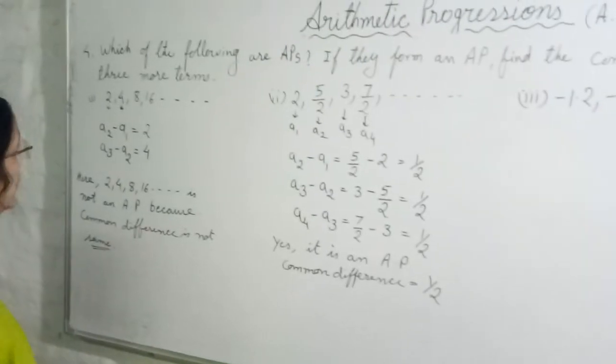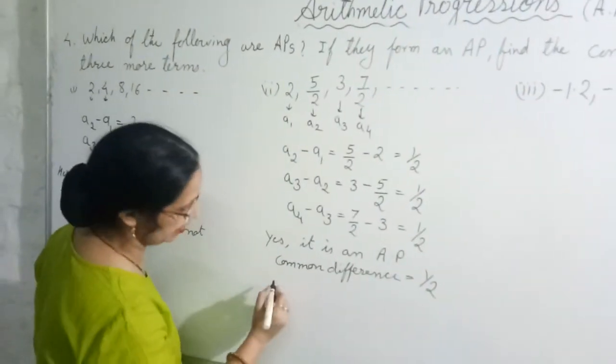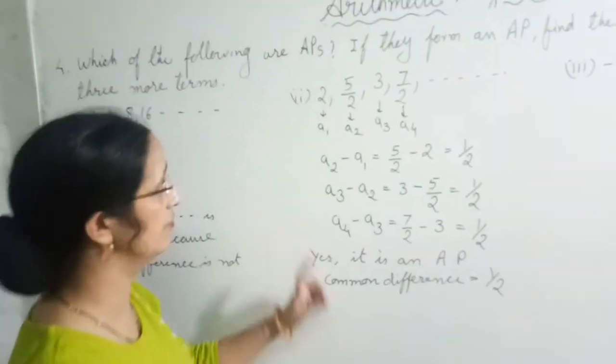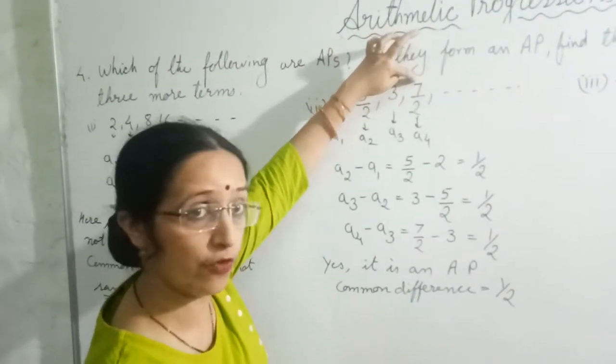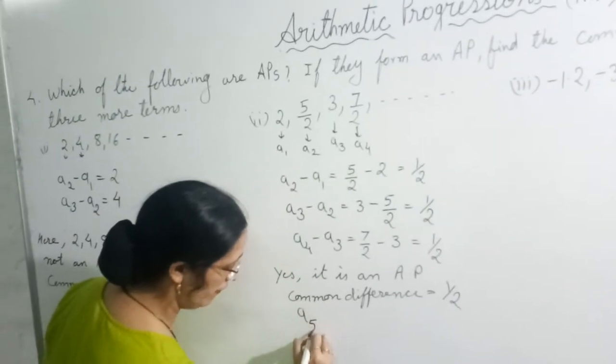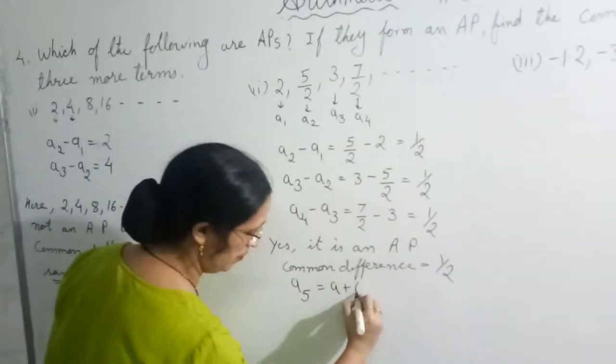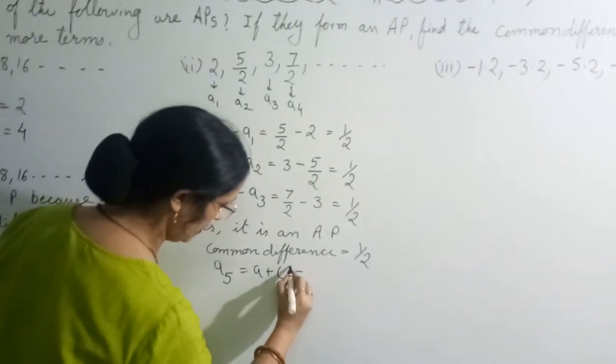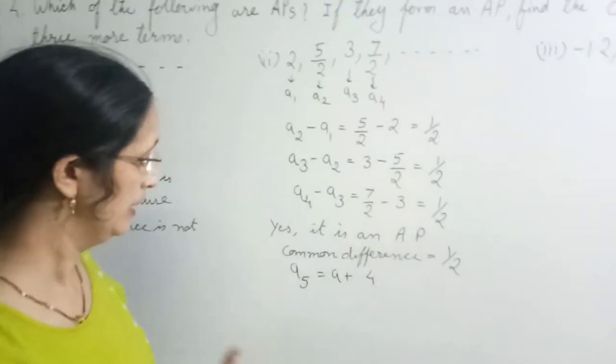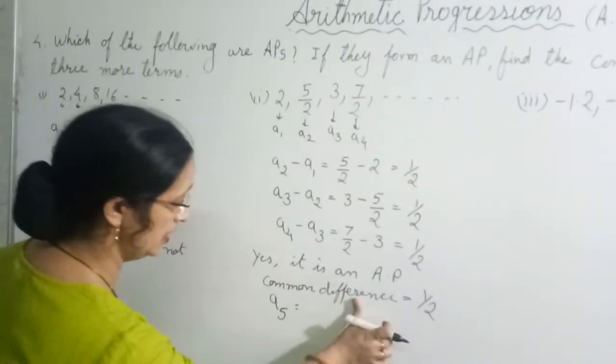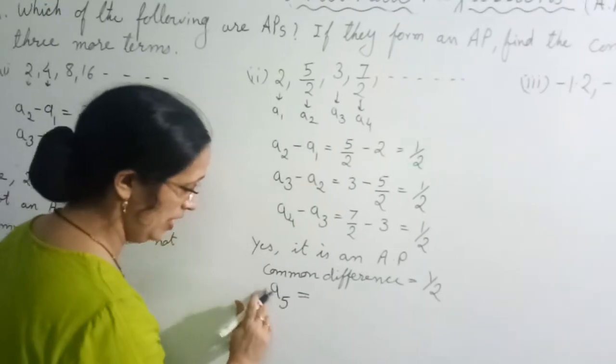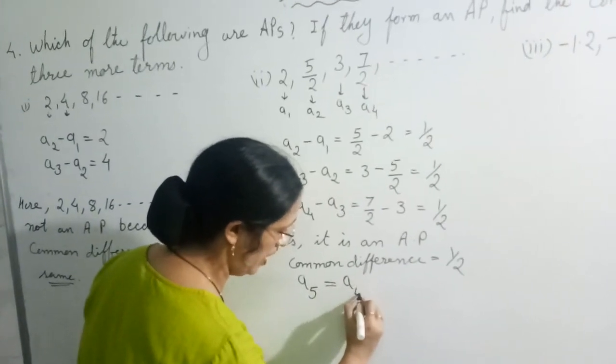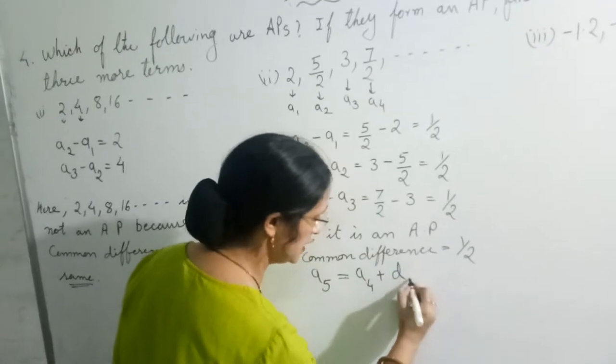Second part they are asking, write 3 more terms. Now look here. Very simple logic it is. For writing 3 more terms, they have given till term A1, A2, A3, A4. So we have to find A5. Instead of using the formula I am teaching you the trick. Very simple. We have to find A5. So what we will do? We will write here 4th term A4 plus common difference, means plus D. So what is the 4th term A4?